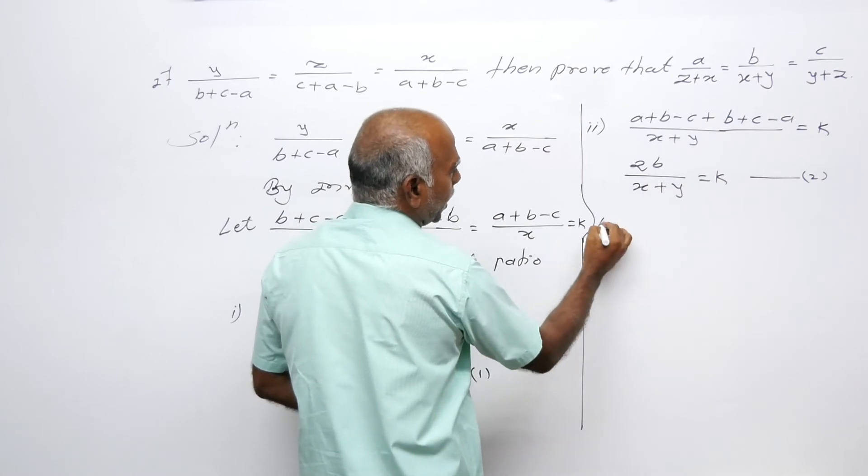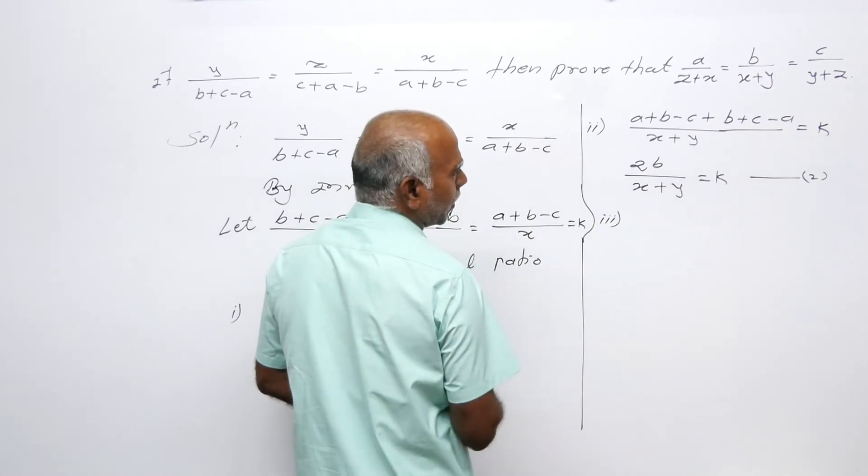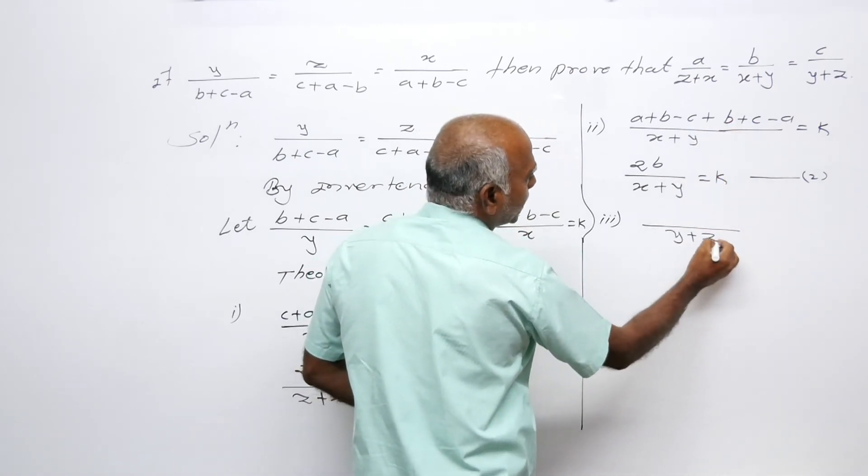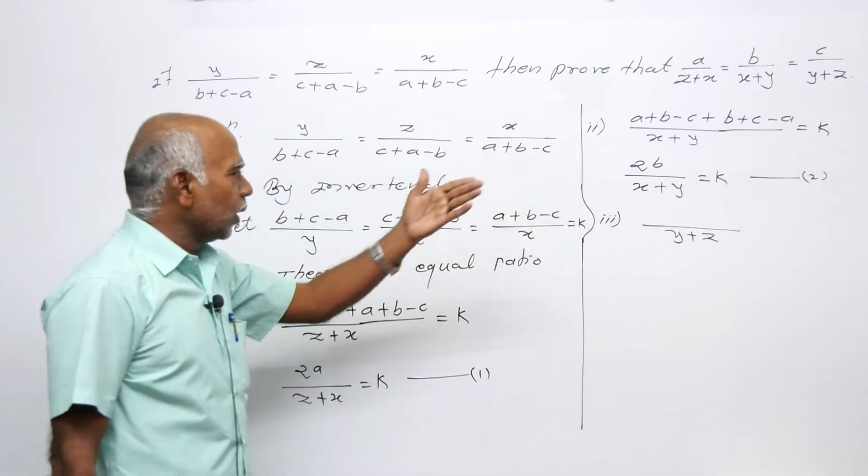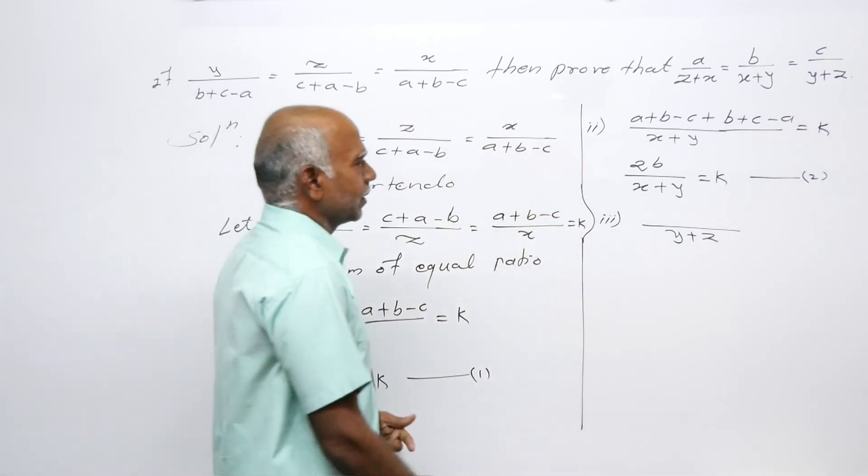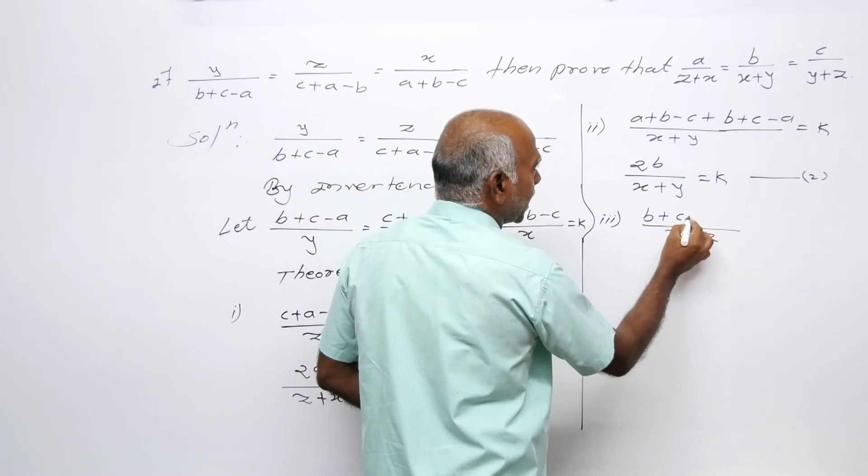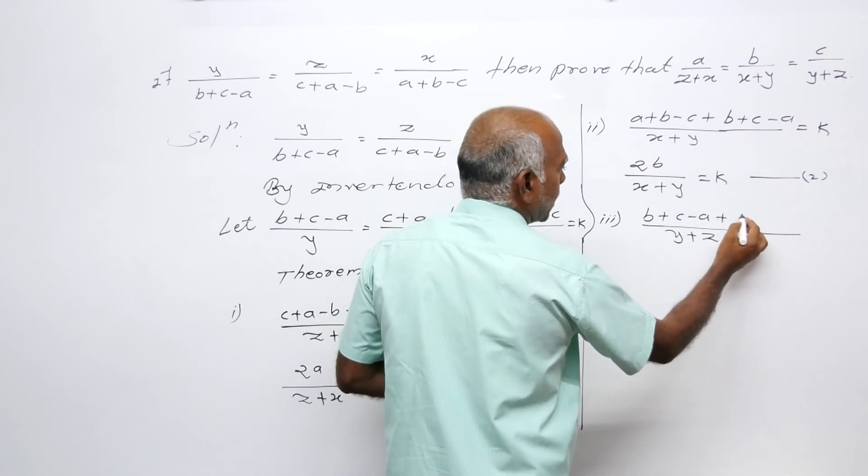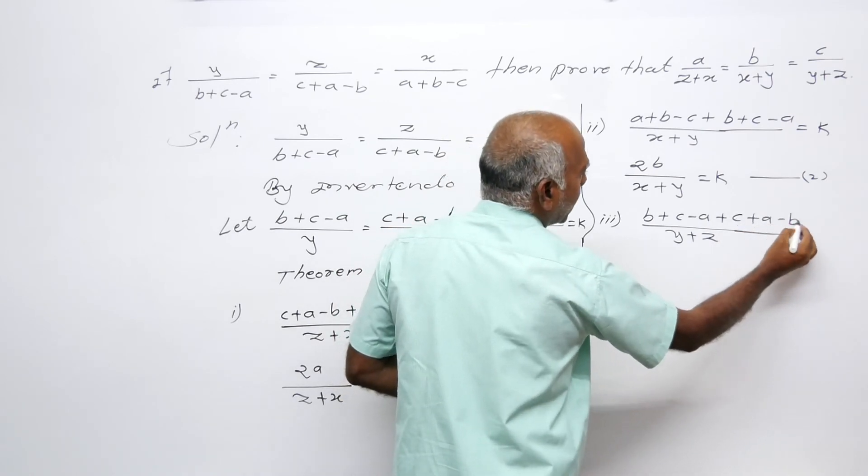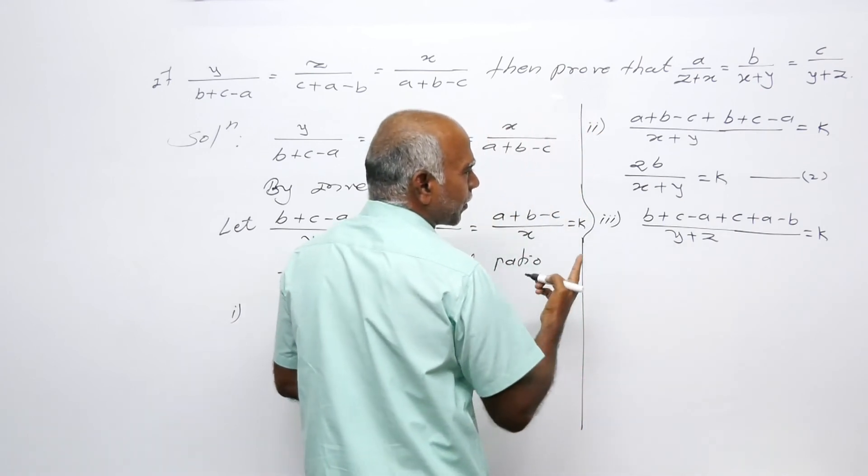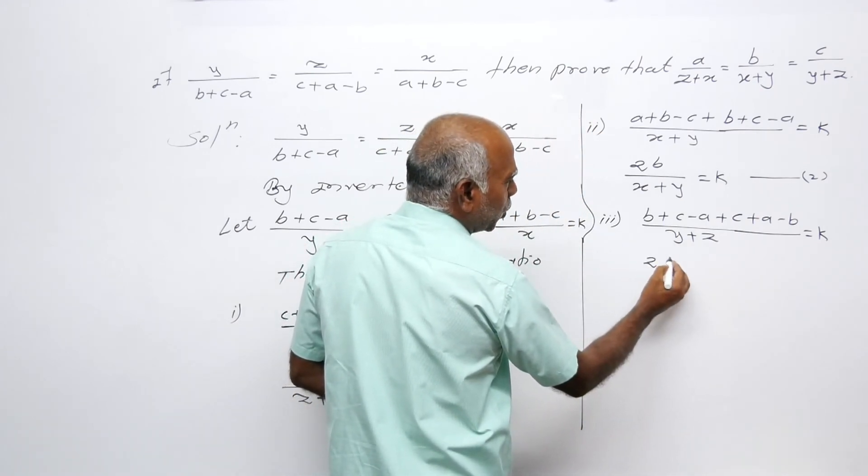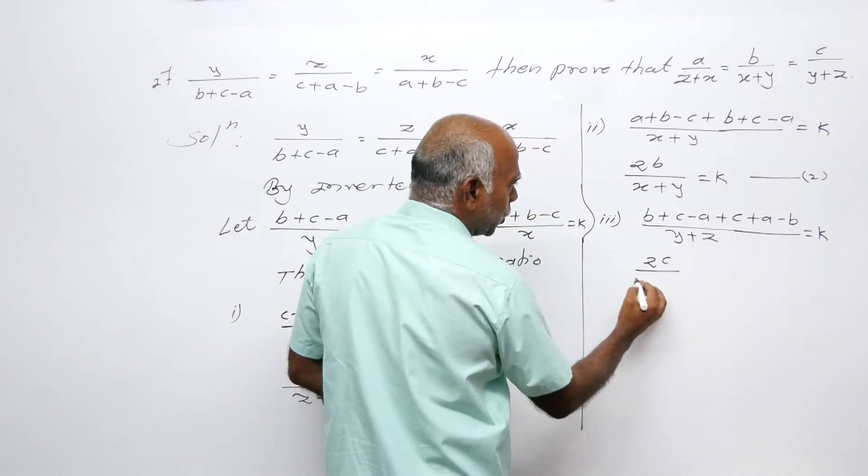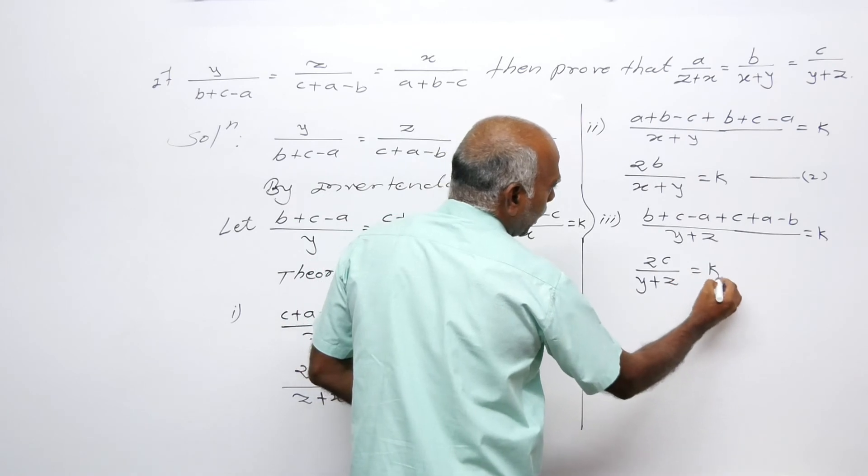Statement number 3: y plus z. The y value is B plus C minus A plus z value is C plus A minus B equals 2C upon y plus z equals k.